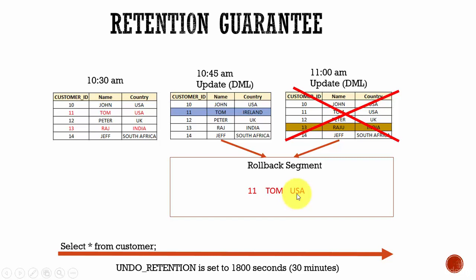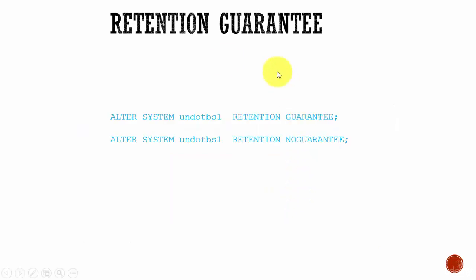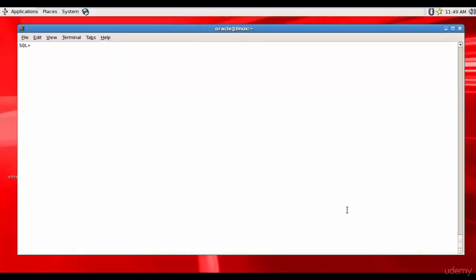This concept is called retention guarantee. You configure it by using ALTER TABLESPACE with the undo tablespace name — for example undo_tbs1 — and specifying RETENTION GUARANTEE. To revert it, you use RETENTION NO GUARANTEE. Be very careful: only set retention guarantee when you need to support long-running queries that are truly important.